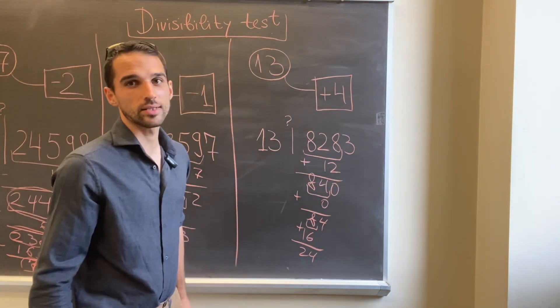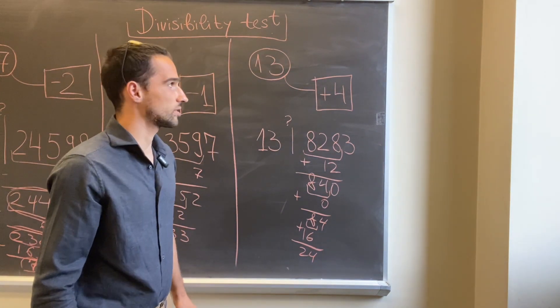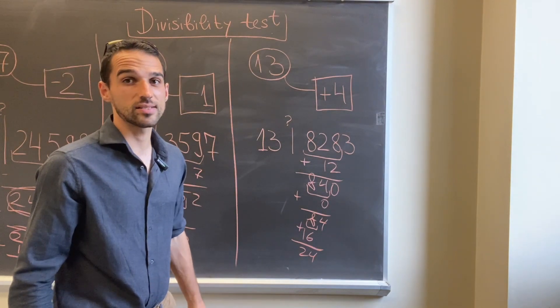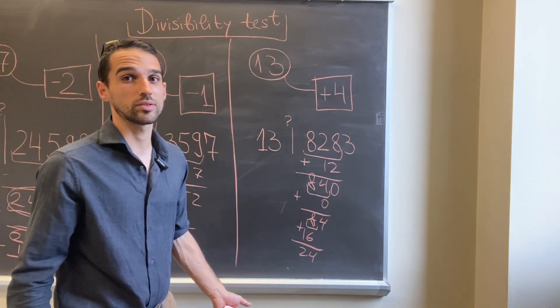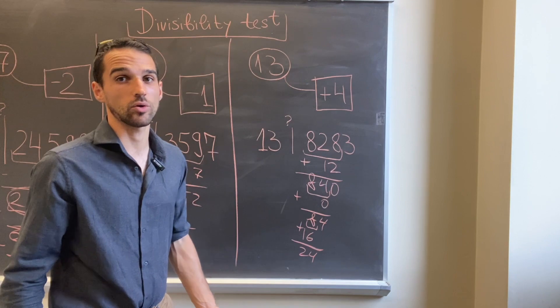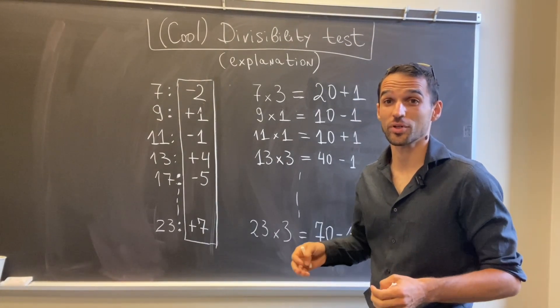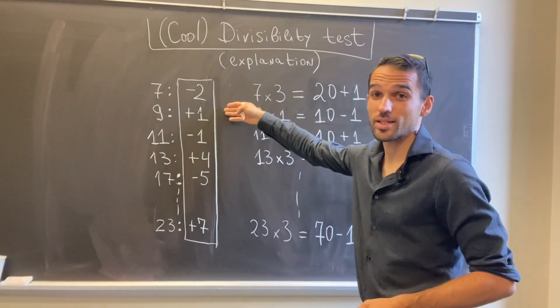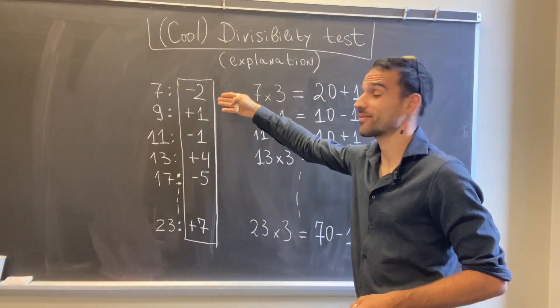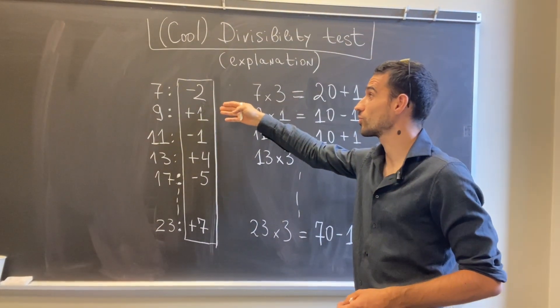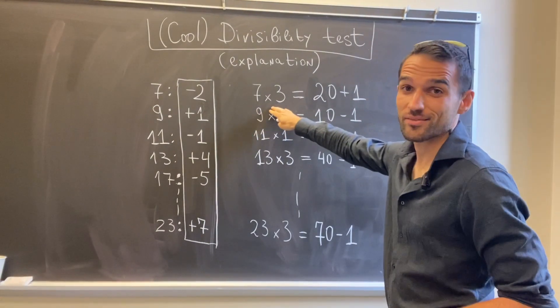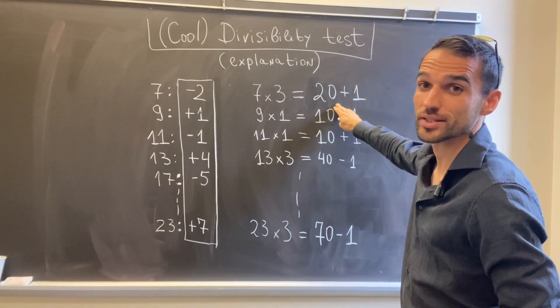So that's it, we can test divisibility in this unified way. But let's see why this weird peculiar rule works at all. First let's figure out where these magical constants are coming from. You see them again over here. For 7 the constant was negative 2, and we have 7 times 3 equals 20 plus 1.